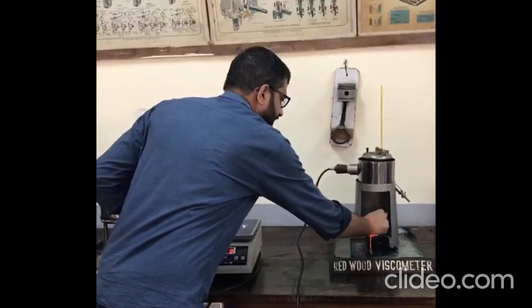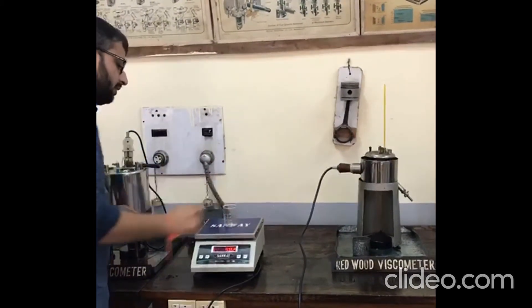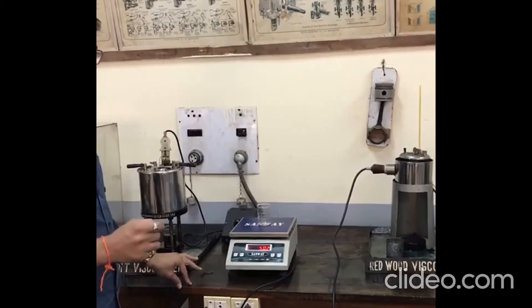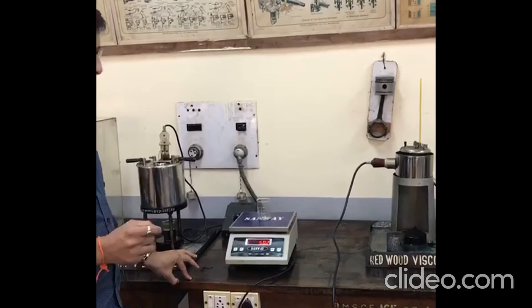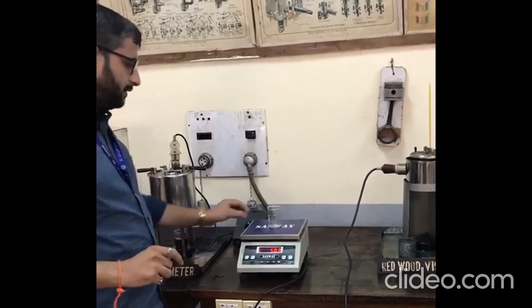After that, measure the beaker along with 50 cc of oil and note the corresponding mass. This will be W2. Initially empty beaker is W1. W2 minus W1 divided by 50 will be the density of the oil.